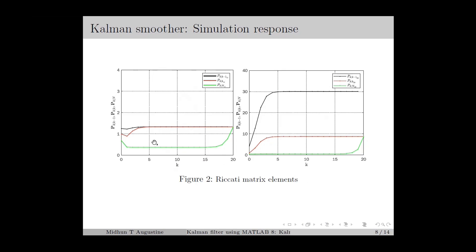Figure 2 shows the diagonal elements of the Riccati matrices Pk|k-1, Pk|k, and Pk|N. We can observe that the value of the diagonal elements of Pk|N is less than the diagonal elements of Pk|k, which is less than the diagonal elements of Pk|k-1. This basically implies that the variance of the state estimation error with the Kalman Smoother will be the minimum.